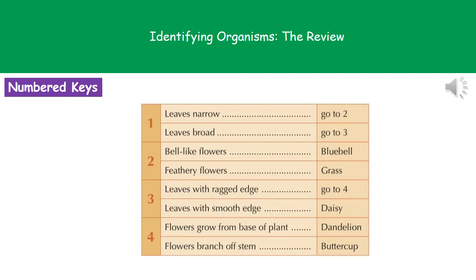The second type of key is the numbered key. It's exactly the same principles as the spider key, just set out in a different way. Here we've got four different questions with two possible answers each. If our leaves are narrow it tells us to go to question two, and if we had bell-like flowers then we'd have a bluebell. All we do is read the options and follow where it tells us to go, then write the final name in the answer space.